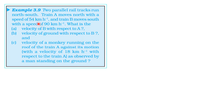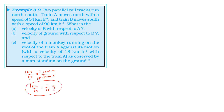First of all, when we look at kmph, to convert to meters per second we multiply by 5 by 18. So 54 kmph gives 5 by 18 multiplied by 54, which is 15 meters per second. And 90 kmph gives 5 by 18 multiplied by 90, which is 25 meters per second.